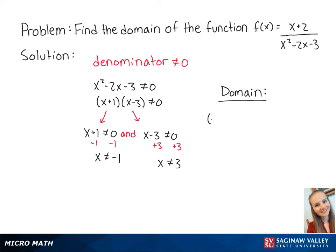So the domain is the set of numbers between negative infinity to negative 1 and the set of numbers between negative 1 and 3 and the set of numbers between 3 and positive infinity. The parentheses mean that the endpoints are not included. And this is the final answer.